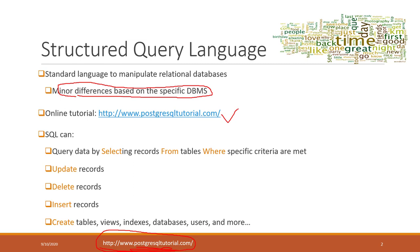SQL can query data using the SELECT statement, letting you retrieve specific records from tables where certain criteria are met. You can also update records, delete records, and insert records. Beyond data manipulation, SQL lets you create tables, views, indexes, databases, and users. Essentially, everything we've done manually so far can be done through SQL.